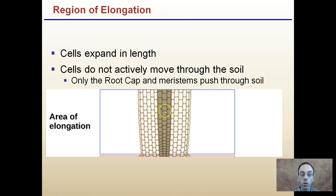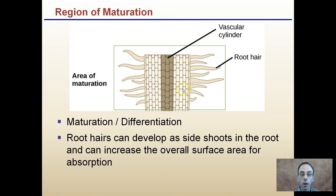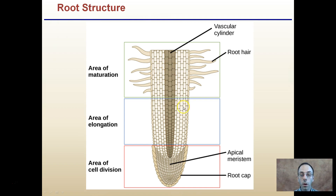In the area of maturation, cells become more mature and specialized in structure, and root hairs begin to develop here - these are side shoots that increase surface area for better absorption. The vascular cylinder, containing xylem and phloem, is also found here. You should be familiar with each of these three areas and what occurs in each.